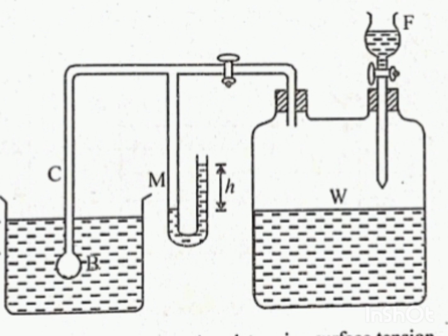M is a manometer used to measure the pressure difference. The capillary tube is connected to the manometer. W is a bottle with two airtight cocks, commonly known as a wolf bottle.